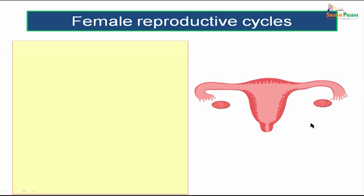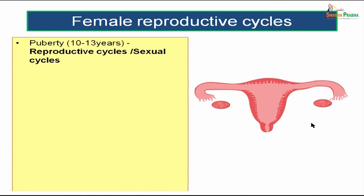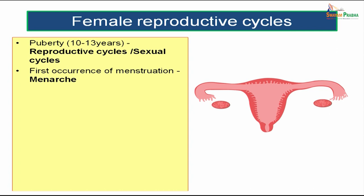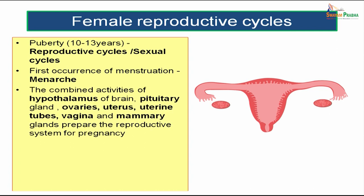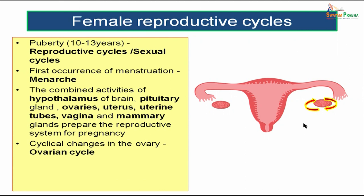Now we will move on to the female reproductive cycles. The reproductive cycles start at puberty, roughly 10 to 13 years of age. The first occurrence of menstruation is known as menarche, and it happens by the combined activities of the hypothalamus, pituitary gland, ovaries, uterus, uterine tubes, vagina, and mammary glands. The cyclical changes in the ovary are called the ovarian cycle, and the cyclical changes in the uterus are called the menstrual cycle.